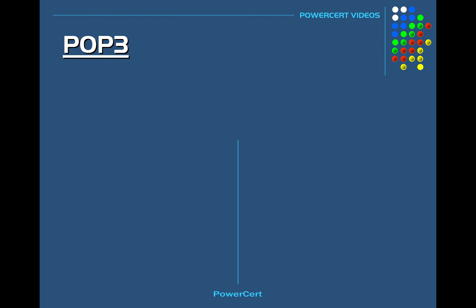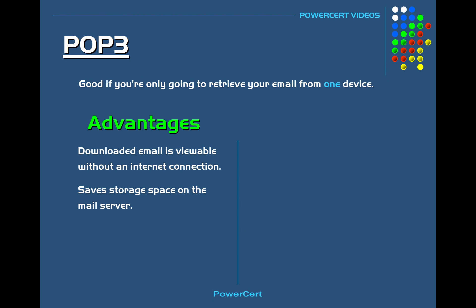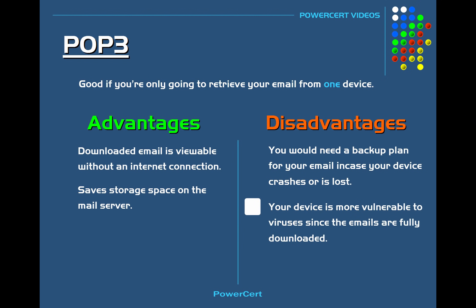Which protocol you want to use really depends on your situation. POP3 is good if you're only going to retrieve your email from one device. An advantage of POP3 is that since the email is downloaded to your device, you can view it even without an internet connection — you only need a connection when receiving or sending email. Another advantage is it saves storage space on the mail server since emails are deleted when downloaded. A disadvantage is you need a backup plan in case your device crashes or is lost, and your device has a higher chance of being infected with viruses since emails are fully downloaded.